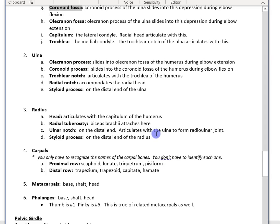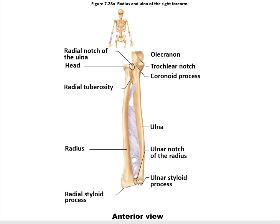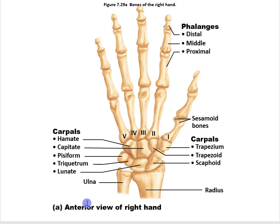For example, you might see a question like: which of the following bones is found in the wrist? Options might include humerus, temporal bone, mandible, or lunate — and lunate is your answer, as it is a carpal bone of the wrist. Just recognize these names, primarily for lecture exam questions. Here's a picture showing the anterior view of the right hand with a proximal row and a distal row of carpal bones.